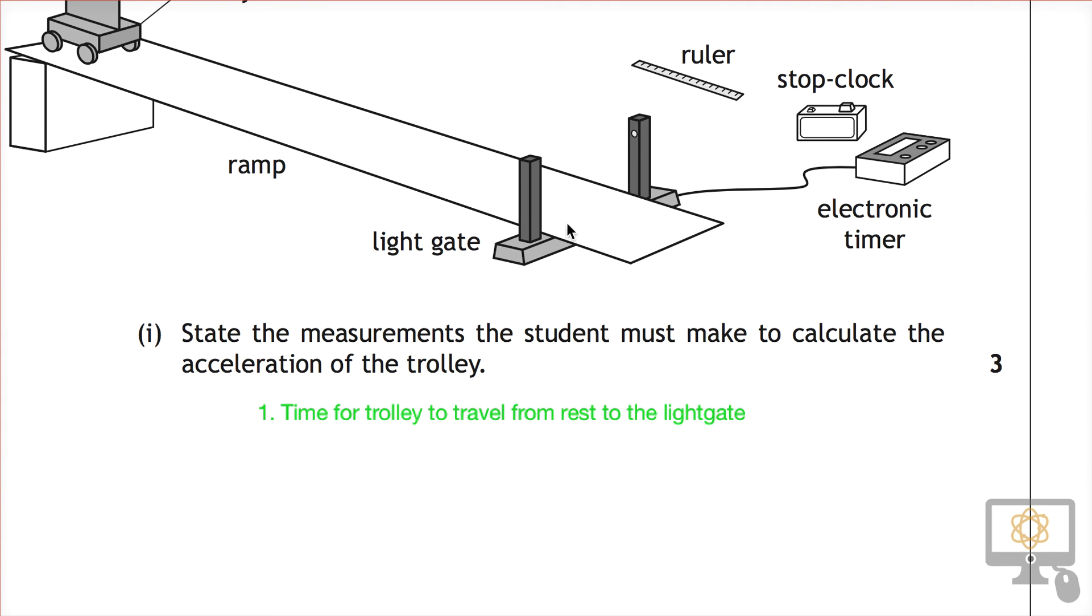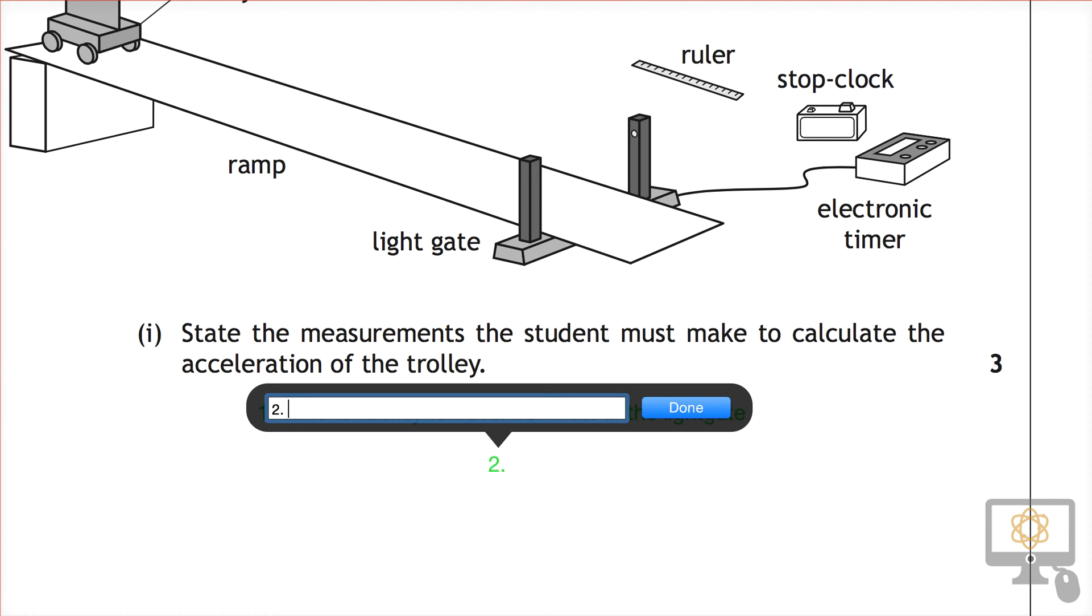And then, as I said, the second two were the speed of the trolley at the bottom, which is the time through the light gate with the electronic timer, and the length of the card on the trolley. So number two is the length of the card on the trolley.